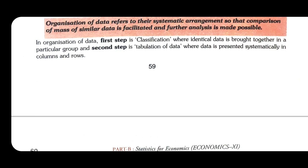Classification میں similar یا identical type کے data کو ایک group میں رکھتے ہیں۔ For example, males and females الگ الگ؛ class wise دیکھیں تو 8th، 9th، 10th کا data الگ الگ؛ subject wise دیکھیں تو arts، commerce، science کا الگ الگ؛ rural/urban اور boys/girls کا data الگ الگ — یہ classification ہے۔